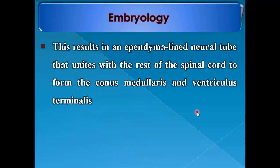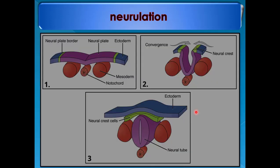This forms the conus medullaris and ventriculus terminalis. In this diagram, we see the ectoderm with the future skin covering, the neural plate border, and the neural plate. By the process of folding, this forms a neural tube. The edges of the neural plate border will form what are called neural crest cells, whose derivatives we will discuss later.